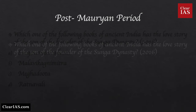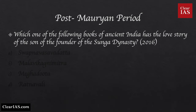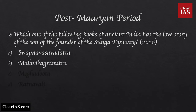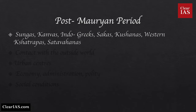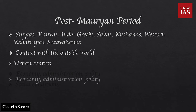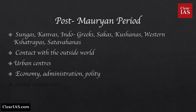Next is the post-Mauryan period. Sample question: Which book of ancient India has the love story of the son of the founder of the Sunga dynasty — Swapna Vasavadatta, Malavikagnimitra, Meghaduta, or Ratnavali? Under this, learn about Sungas, Kanvas, Indo-Greeks, Shakas, Kushanas, Western Kshatrapas, Satavahanas, contacts with the outside world, urban centers, economy, administration and polity under different kingdoms, and social conditions and lifestyle.